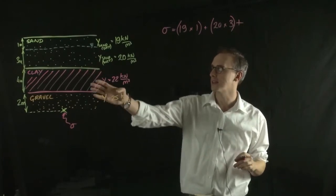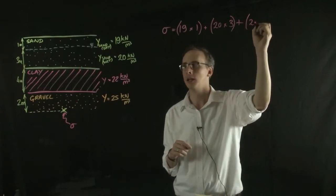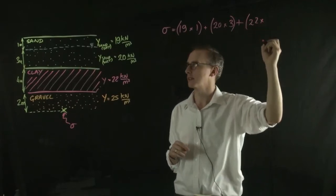We can then take the clay layer and it has a unit weight of 22 and we multiply that by its thickness which is 4.